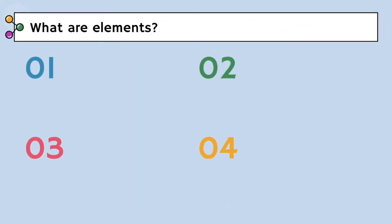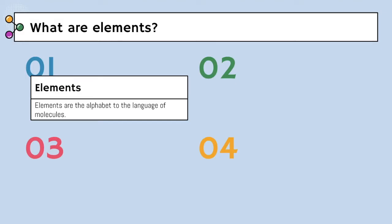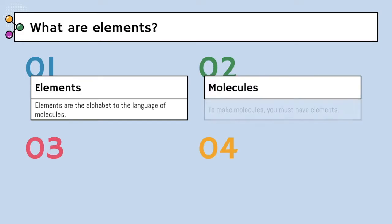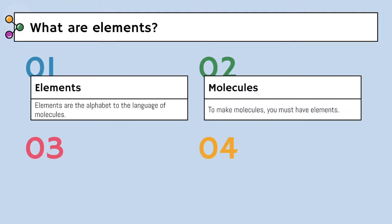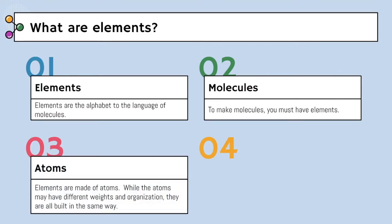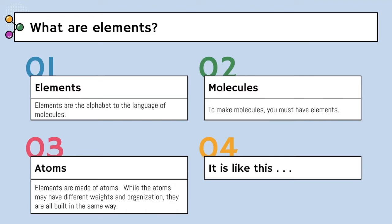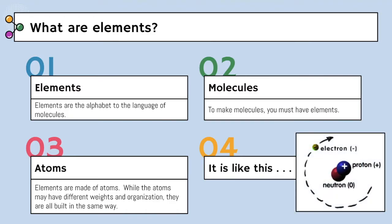So what are elements? We know atoms make them up, but what exactly are they? Elements are the alphabet of the language of molecules. To make molecules, you must have elements. They are the letters of your molecules, which your molecules are your words. Elements are made of atoms. While the atoms may have different weights and organization, they are all built in the same way — they have the nucleus and the electrons that surround the nucleus. The proton and the neutron are in the center with the electrons around them.